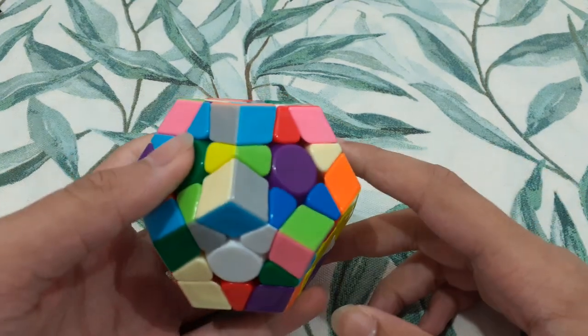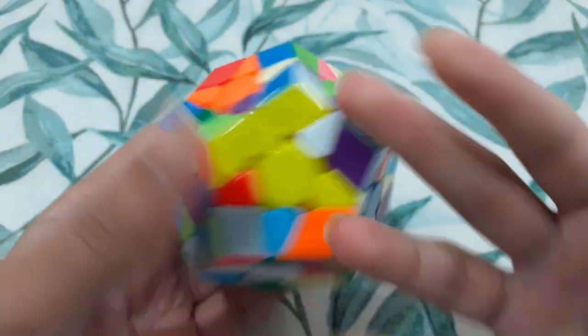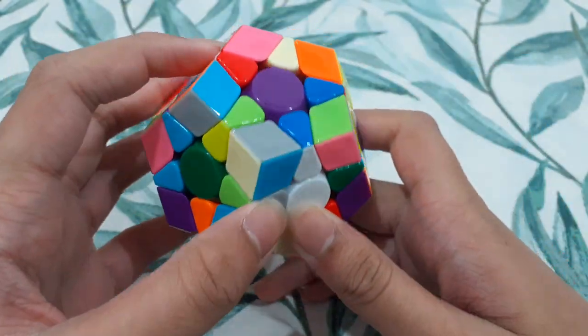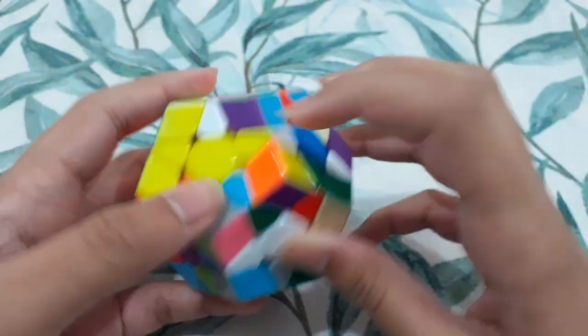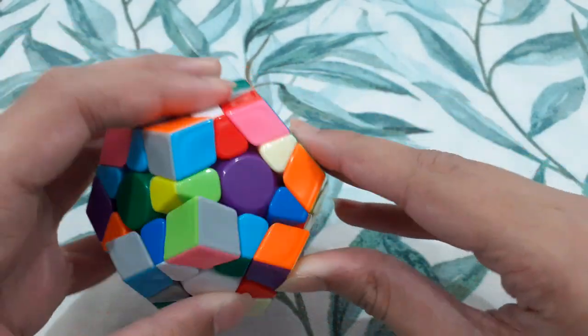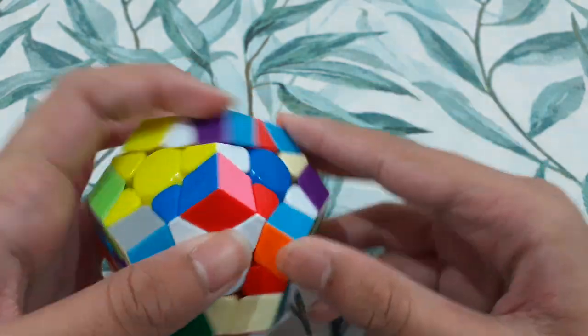Hey, what's up guys, this is Megaminx example solves from a sub-45 solver. Getting straight into it, I see this piece, these two. I think what I might be able to do is just something like this. This is quite a bad star.